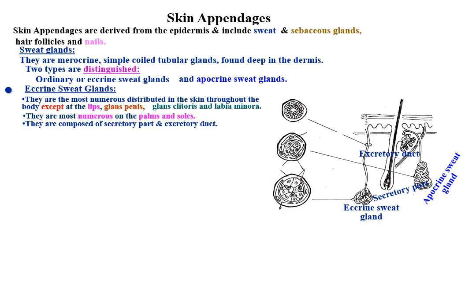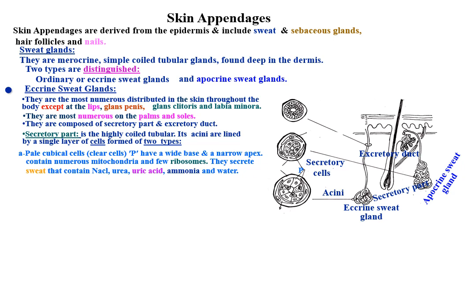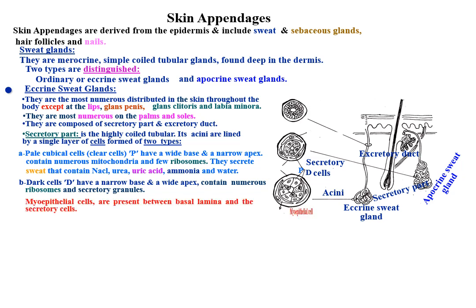The secretory part is lined by a single layer of cells formed of two types. Pale cuboidal cells, or clear cells, which have a wide base and a narrow apex, contain numerous mitochondria and few ribosomes. Dark cells, on the other hand, have a narrow base and a wide apex and contain numerous ribosomes and secretory granules. Myoepithelial cells are present between the basal lamina and the secretory cells.